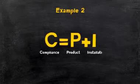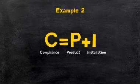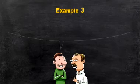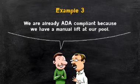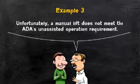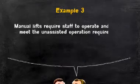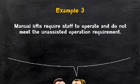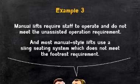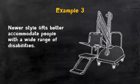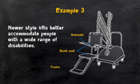Remember, both the product and installation requirements must be met in order to be compliant. And lastly, as you're introducing the new ADA requirements to your existing customer, he interrupts you and states that they are already ADA compliant because they have a manual lift at their pool. If you inform your customer that a manual lift does not meet the ADA's unassisted operation requirement, then you did the right thing. Manual lifts require staff to operate, so they do not meet this requirement. Also, most older manual style lifts use a sling seating system which does not meet the footrest requirement. Additionally, newer style lifts offer armrests, firm seats, and back and leg support, which help better accommodate people with a wide range of disabilities.